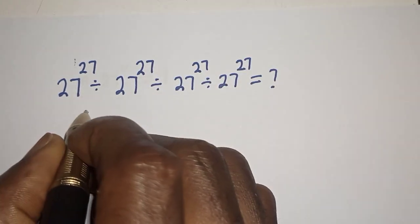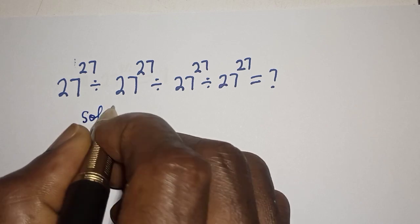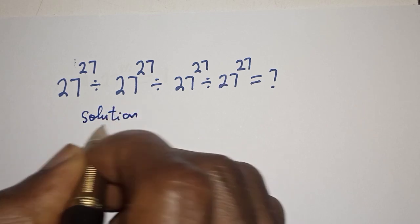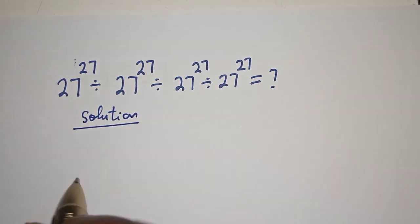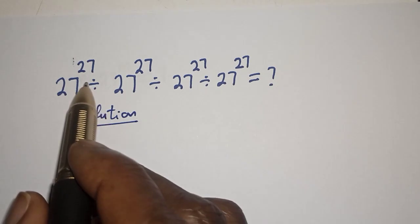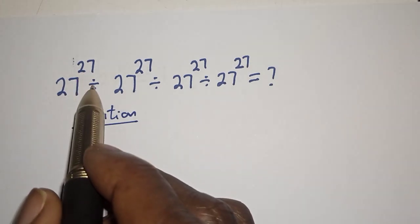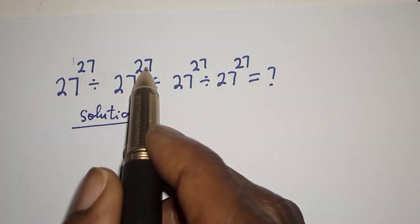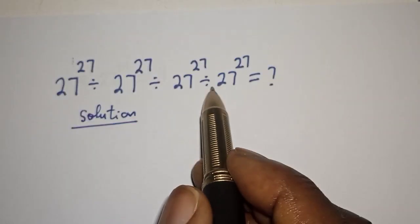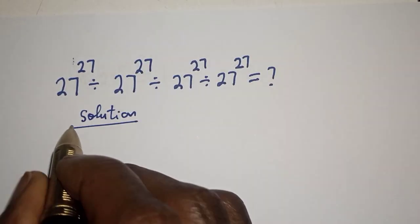Solution: we have 27 raised to power 27 divided by 27 raised to power 27 divided by 27 raised to power 27 divided by 27 raised to power 27.